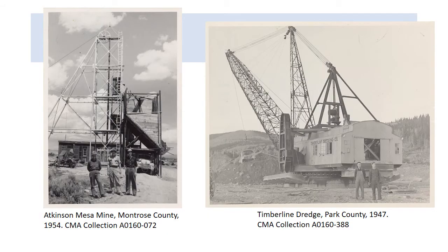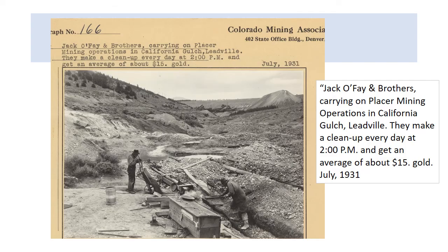There's the Atkinson Mesa Mine in Montrose County and a shot of the Timberline Dredge in Park County in 1947, with the dragline and two miners standing in front of the dredge. This is another example of a print affixed to an envelope with the negative inside. Most of these envelopes have very brief information — the location if known and hopefully the date. In this case we get more information: Jack O'Fay and his brothers make a cleanup every day at two o'clock and get an average of about $15 gold from their placer operations. This is a placer in California Gulch in Ludville — great photos because you can actually see every step of the process.